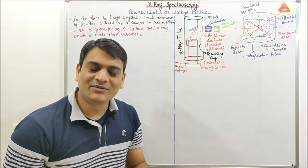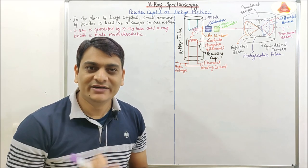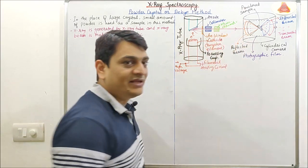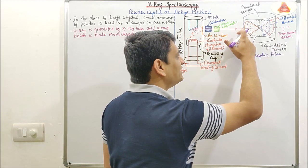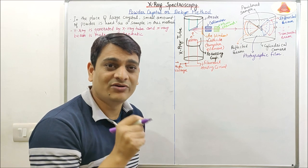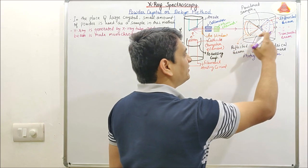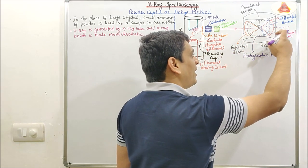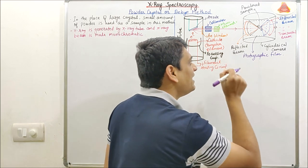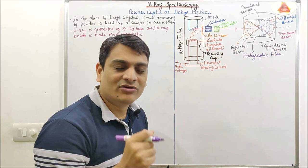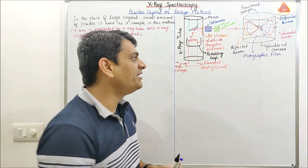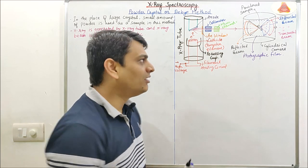This is the complete instrumental setup of the powdered crystal method or Debye method. By using the x-ray tube, we will get the monochromatic radiation, which will enter into the cylindrical camera by using a hole. Then at the axis of this cylindrical camera, the powdered sample will be present in a glass tube or capillary. Some of the radiation will be transmitted and this transmitted radiation will be passed out through a hole. The powdered sample will diffract and reflect some radiation, forming different types of cones according to the planes present inside the sample. These reflected and diffracted beams will form a different pattern in the photographic film.